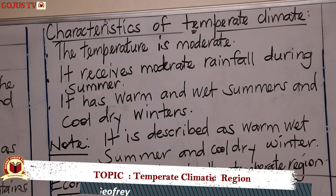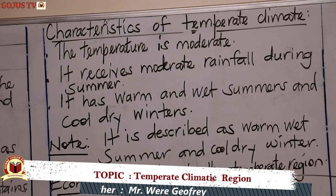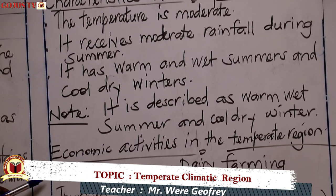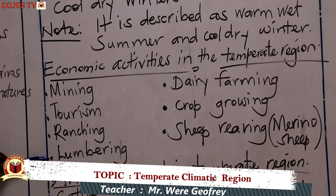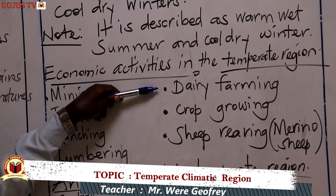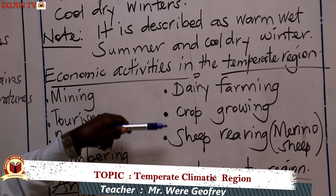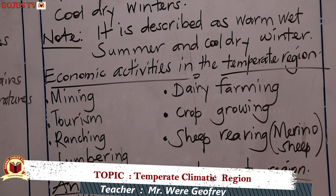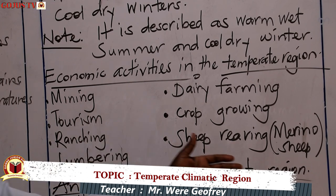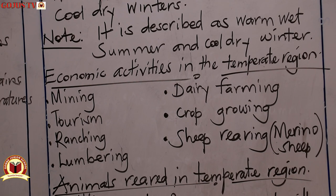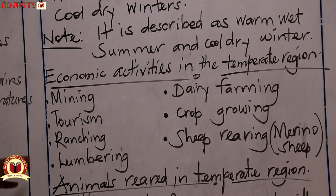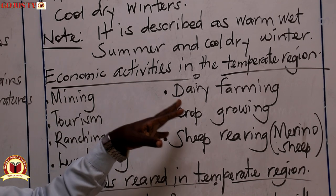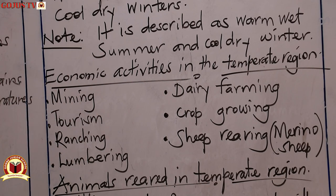Now, what are some of the economic activities carried out in this region? We have: mining, tourism, ranching, lumbering, dairy farming, crop growing, and sheep rearing — basically the merino sheep. You must note the meaning of all these words. We have covered all these words, so go through them and look at the meaning of each.